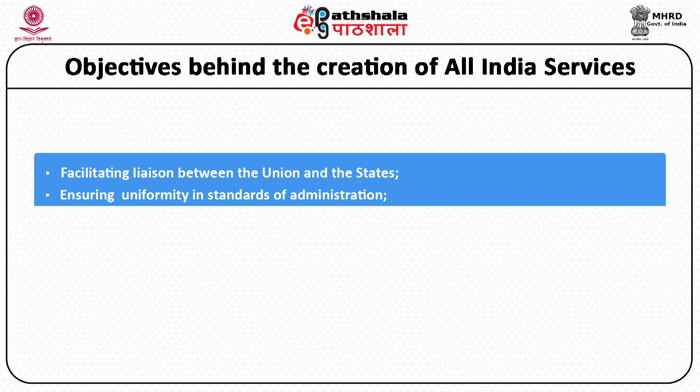The second objective behind the creation of All India Services is to ensure uniformity of administration in the country. We have a uniform pattern of All India Services in the entire country — every state has a class of All India Services and they serve both the Union Government as well as the State Government. So there is a uniformity of administrative structure in the whole country.